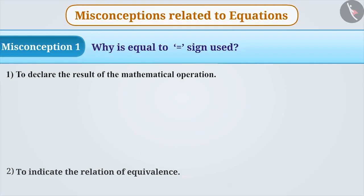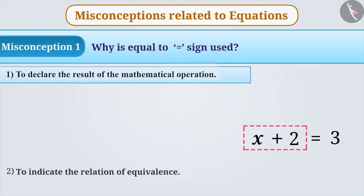From smaller classes, children normally believe that an equal to sign is always used to declare the result of a mathematical operation. Just as x + 2 = 3 tells us that the result of the addition of x and 2 is 3.